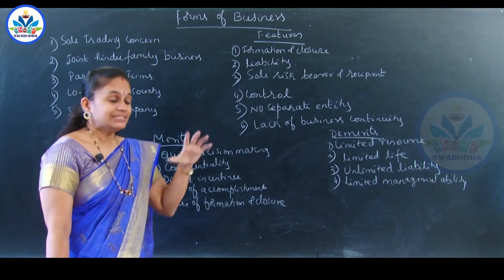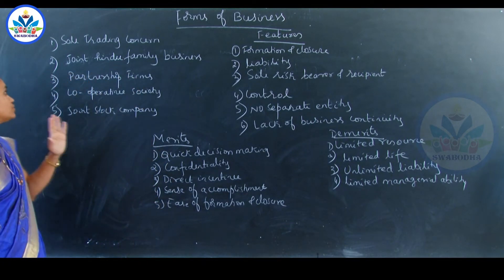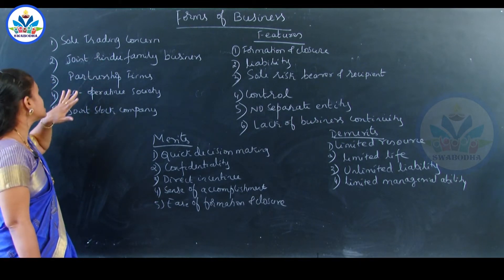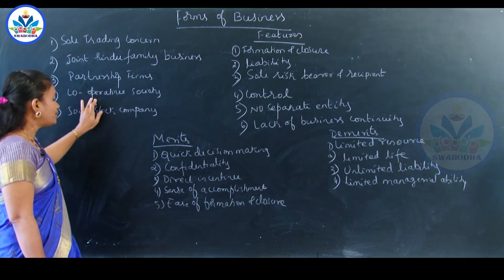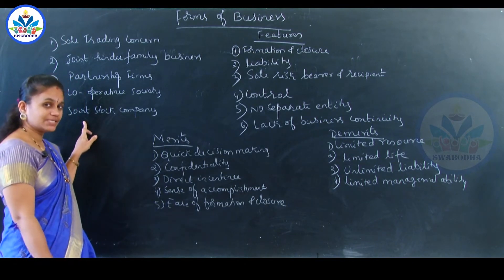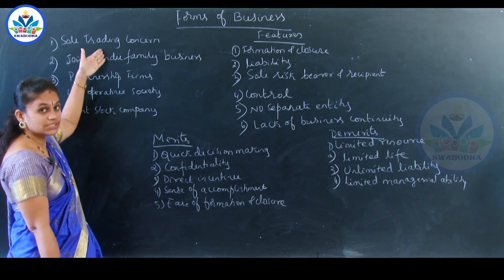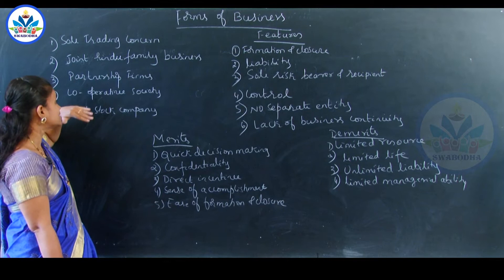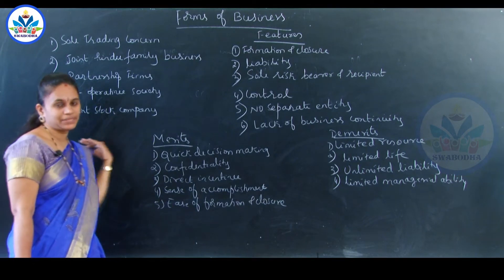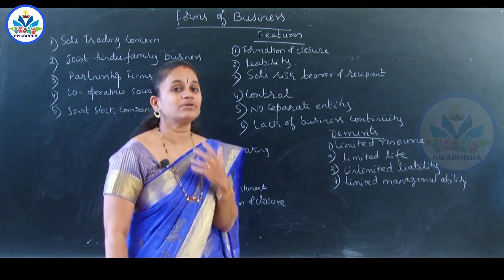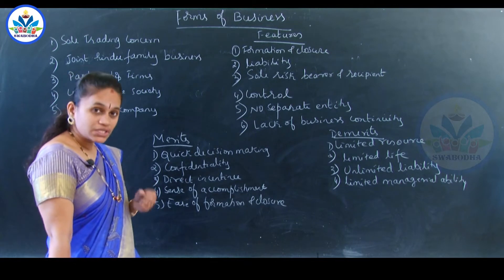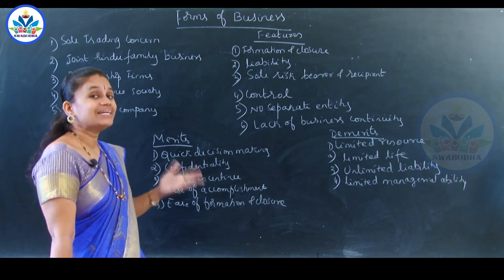The various forms of business — generally we find five forms of business: sole trading concern, joint Hindu family business, partnership firm, cooperative society, and a joint stock company. In this chapter, we are going to study about each and every aspect in detail. Today I will tell you what is sole trading concern and what are its merits and demerits.